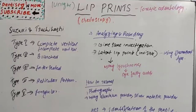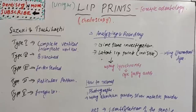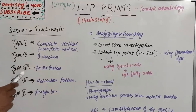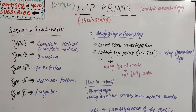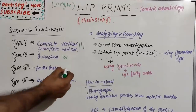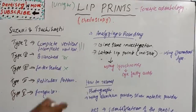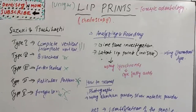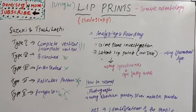There are many classifications of lip prints. One of them is the Suzuki and Tsuchihashi classification, which classifies lip prints into five types: Type 1 — completely vertical or incomplete vertical; branched; intersected (crossing somewhere); reticular pattern; and irregular. These are the five types given by Suzuki and Tsuchihashi.